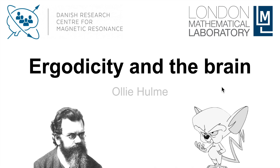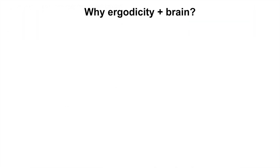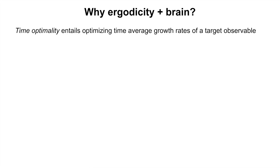I'm going to talk about ergodicity in the brain. Why ergodicity in the brain? Well, this is something that people often ask me. It's because I'm interested in time optimality. Time optimality entails optimizing the time average growth rate of a target observable — something that you care about, like wealth, calories, or hydration.